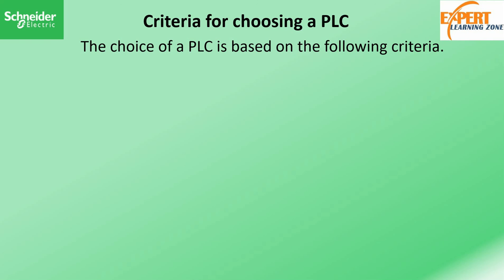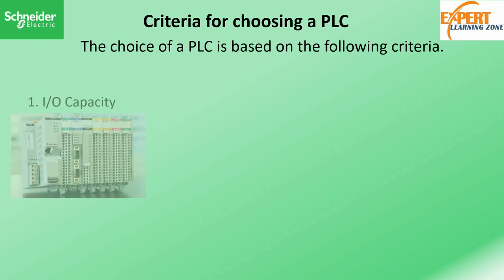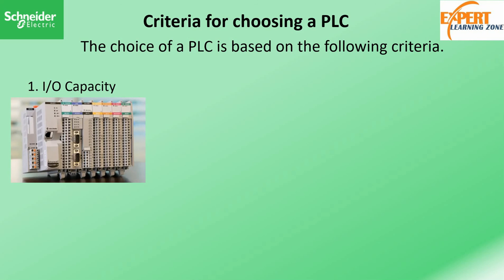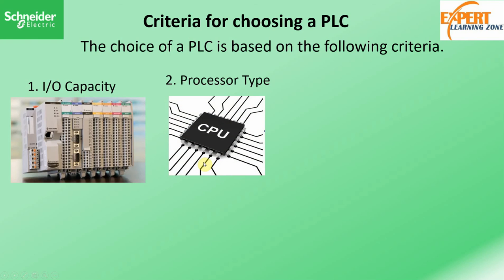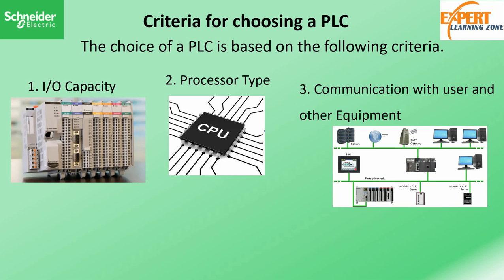We are now going to look at the criteria for choosing a particular PLC. First is the input/output capacity — the number of I/O variables the PLC can process must be greater than or equal to the number of I/O variables of the system. The second criterion is the processor. Factors influencing your processor choice include memory size, speed of information processing, and special functions — for example, in the Siemens range the S200 series doesn't have the same processing capability as the S1200 or S1500.